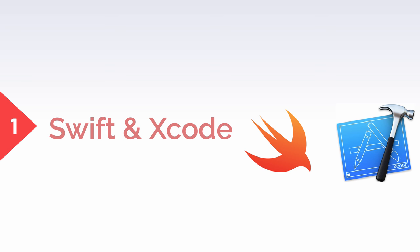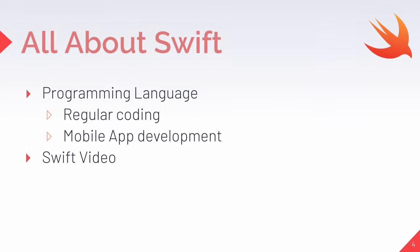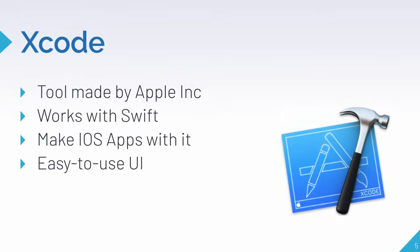So let's review Swift and Xcode. Swift is a full-fledged programming language that's great for making mobile apps with. It's very easy to learn, and many famous iOS apps have been made in Swift. If you're new to Swift, I recommend you check out one of my previous videos, which is a full introduction to Swift and Xcode. Next up is Xcode — it's an iOS development tool made by Apple Inc. itself. It works with the Swift programming language, has its own UI navigator, and helps you make amazing iOS mobile apps.